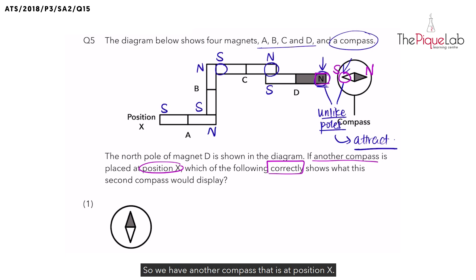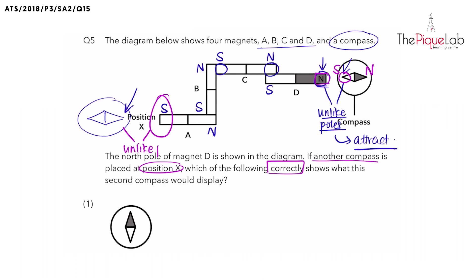So we have another compass that is at position X. So the pole of the needle in the compass that is at position X is the pole that is facing the south pole of magnet A. Remember, what kind of poles attract? Unlike poles attract.